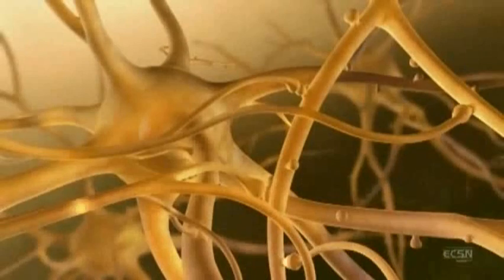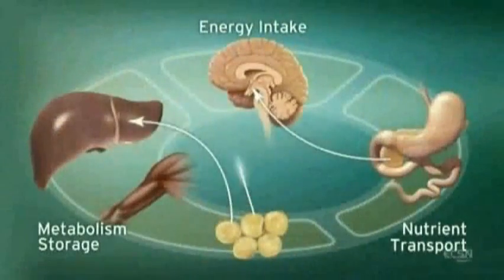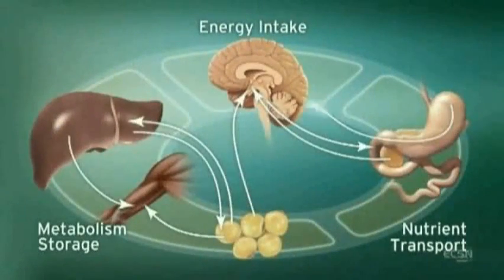In addition to acting as neural messengers, endocannabinoids mediate paracrine and autocrine signaling in adipocytes, hepatocytes and other cells.